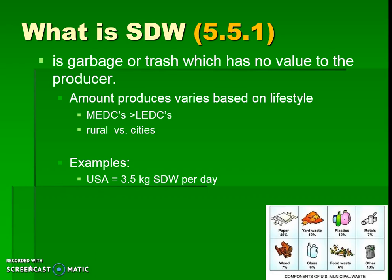These are older statistics, so you'll likely need to compare with more up-to-date ones, but this gives a brief overview. The US uses at least 3.5 kilograms of solid domestic waste per day on average per person, compared to 1.4 kilograms in the European Union. Even though both are MEDCs, their lifestyles are very different, and we can think about what components of the waste stream are creating such a large difference in volume.